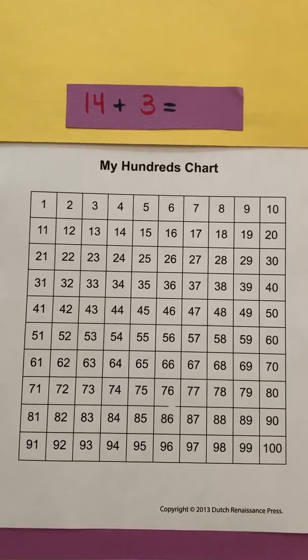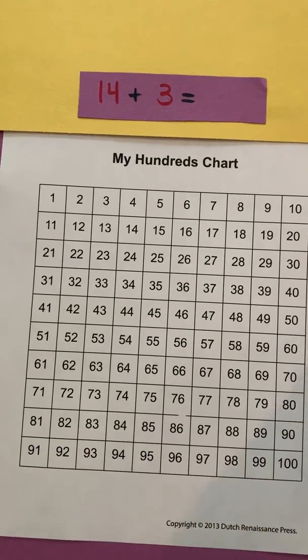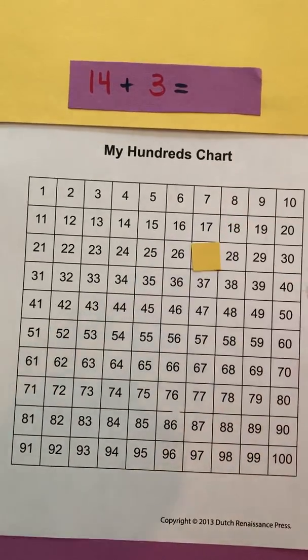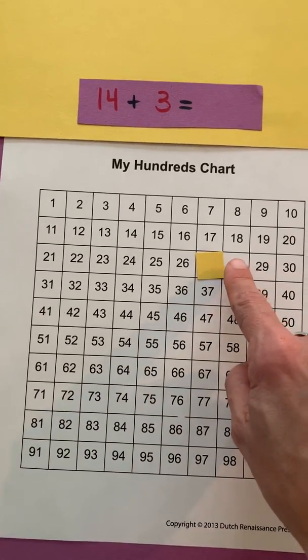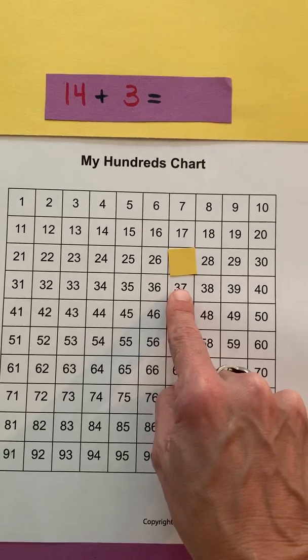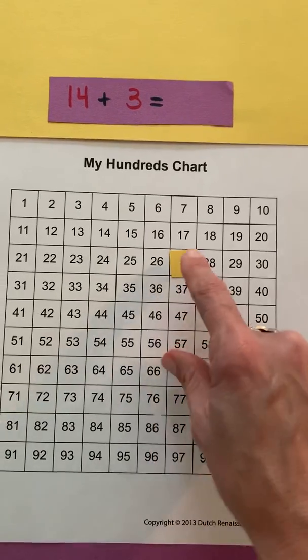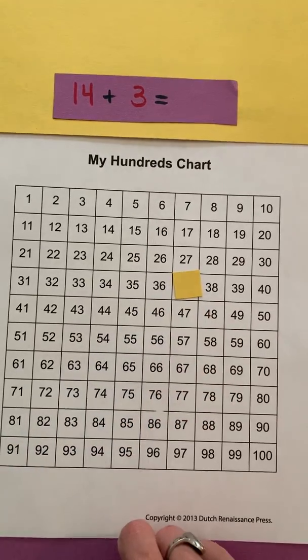And you have used this earlier in the year when you were adding tens and you recognize the pattern that if I am at the number 27 and I want to add 10, that instead of having to count 1, 2, 3, 4, 5, 6, 7, 8, 9, 10, that I can just drop down and you can see the only digit that changes is the digit in my tens place.